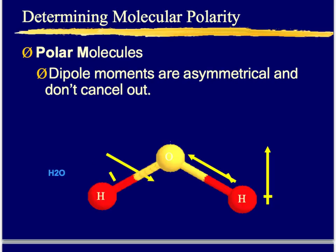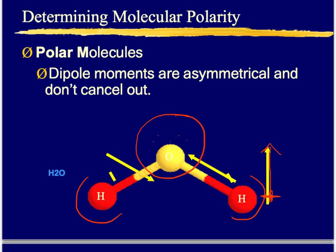Water looks a lot like BF3, so you might think it's also nonpolar. But we're missing that third atom. Oxygen is not being pulled equally — if we draw the Lewis dot structure, we have two sets of lone pair electrons at the top near oxygen. There are far more electrons near oxygen than near the hydrogens. The symbol shows that the hydrogen end of the molecule is more positive and it's more negative moving up toward oxygen. Water is described as a polar molecule because there's an uneven distribution of electrons.